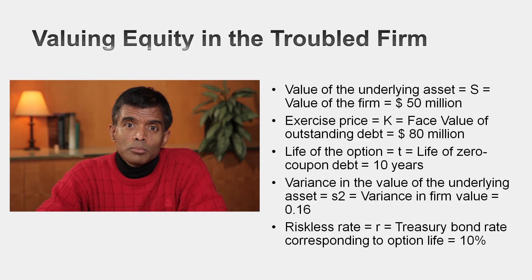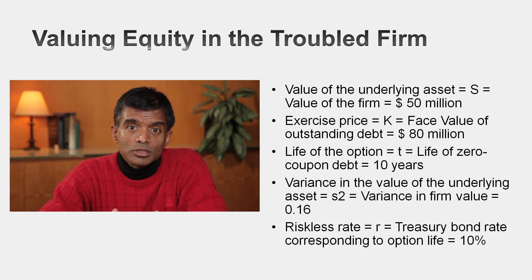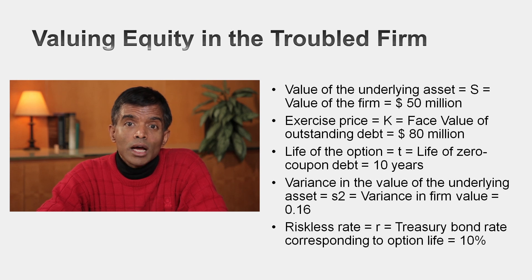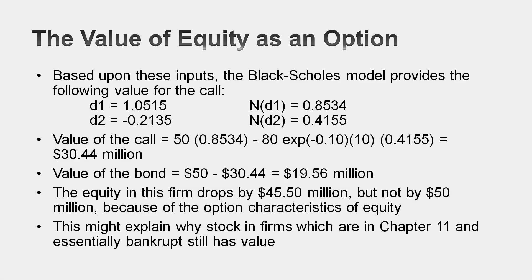You still have an option. Let's revalue the option with new inputs. Most of the option pricing model remains intact — the strike price, the life of the option, the riskless rate, even the standard deviation, because the standard deviation is a percentage value. The one number that's changed is the value of the underlying business: instead of $100 million, it's $50 million. I plug the numbers in and get a new value for the equity of $30.44 million. That's a drop of $45.5 million, but remember the value of the business dropped by $50 million. The debt that used to be worth $24.06 million is now worth $19.56 million — the lenders are bearing some of the loss.